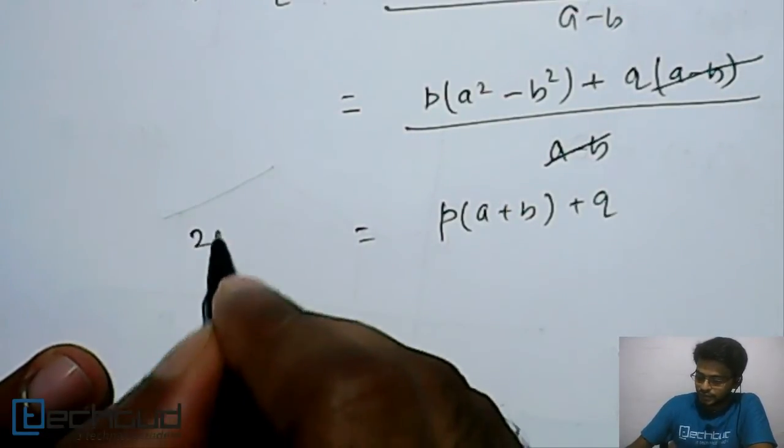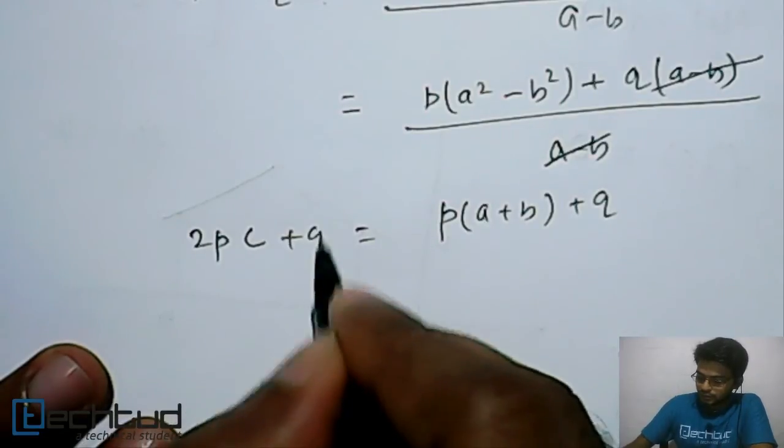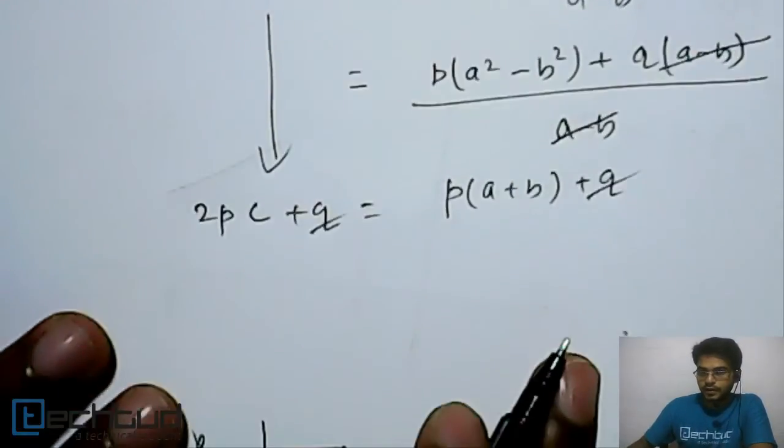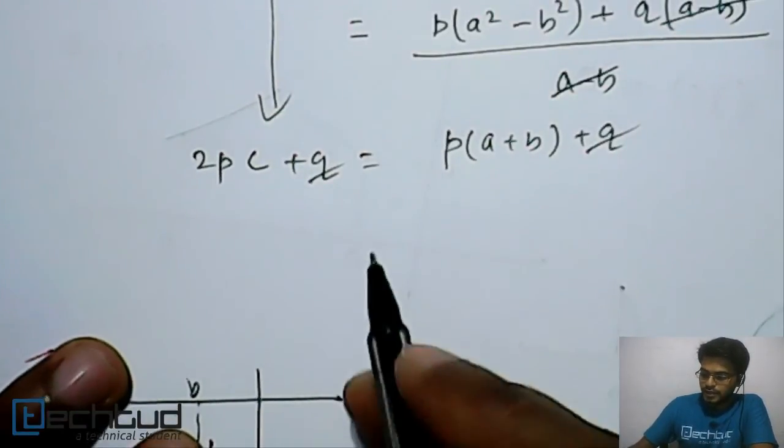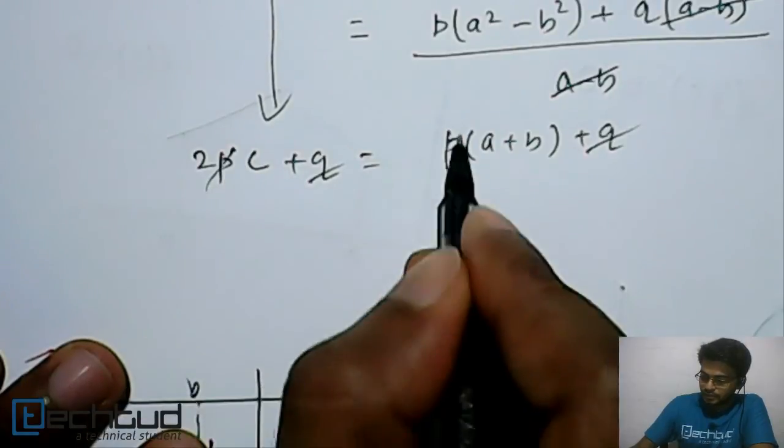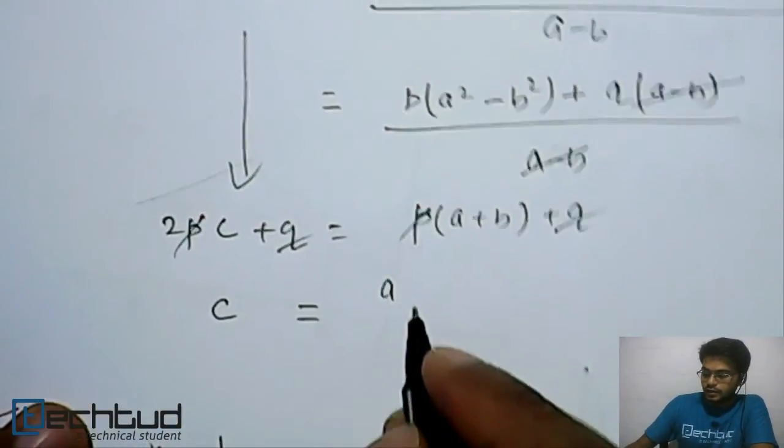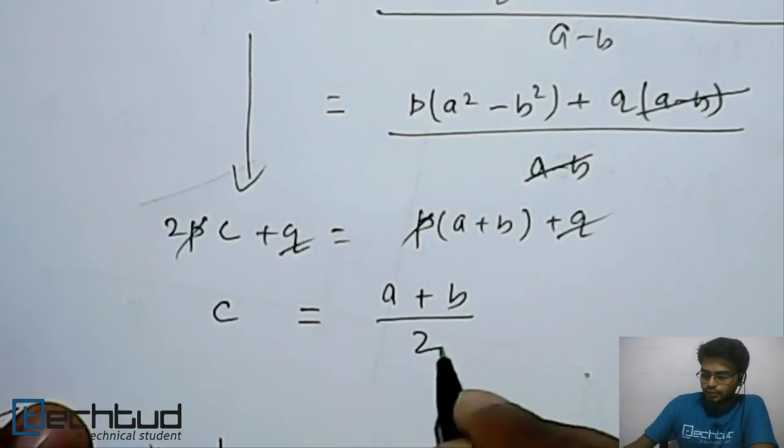And here we have 2pc + q. Now, this q and q is cancelled, and this p and p is also cancelled. So c is equal to (a + b) upon 2.